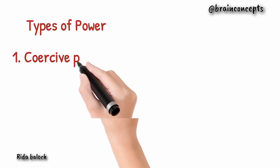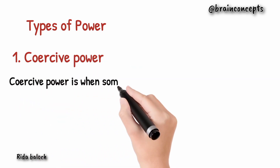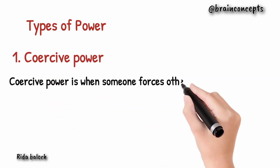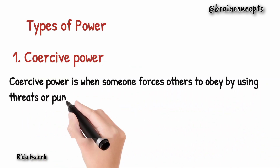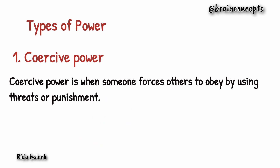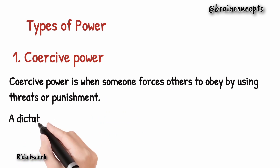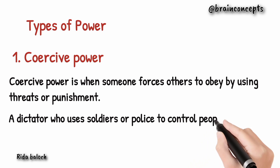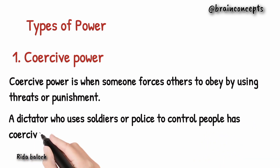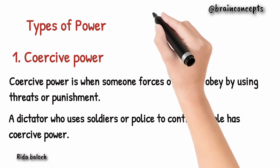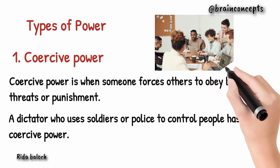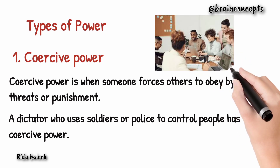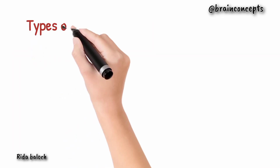The first one is coercive power. Coercive power is when someone forces others to obey by using threats or punishment. For example, a dictator who uses police to control people has coercive power.